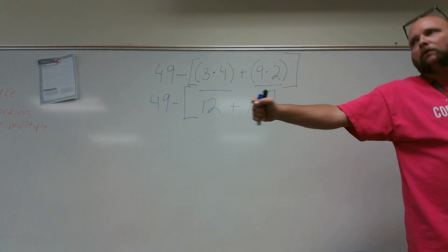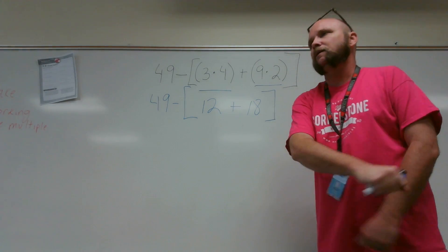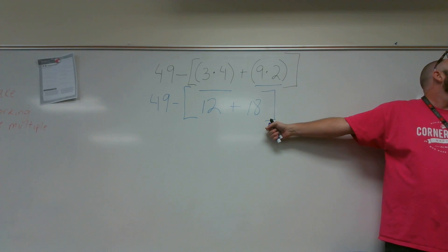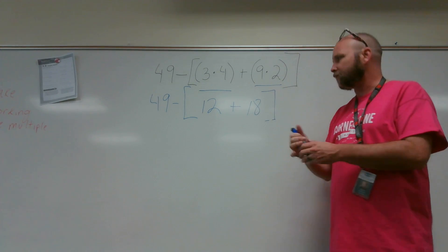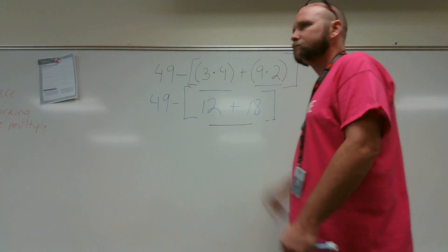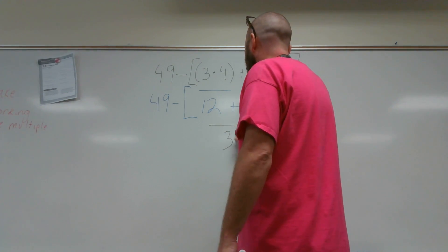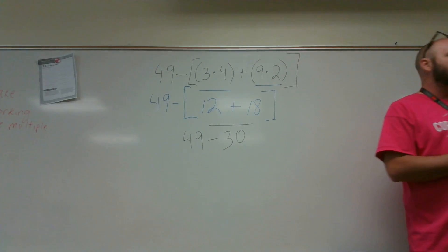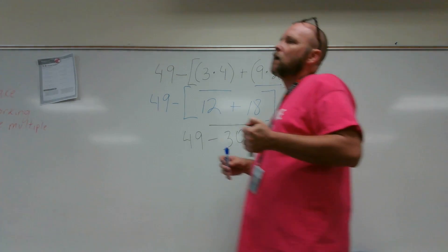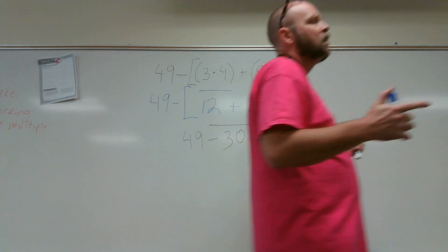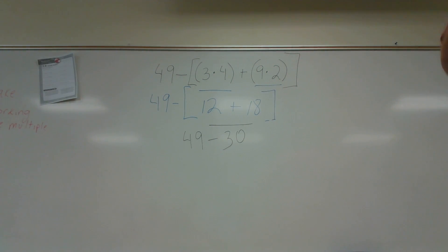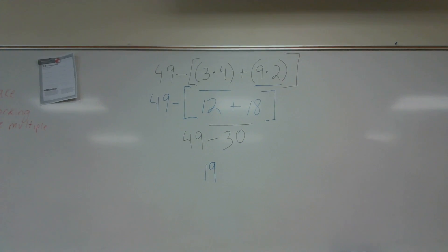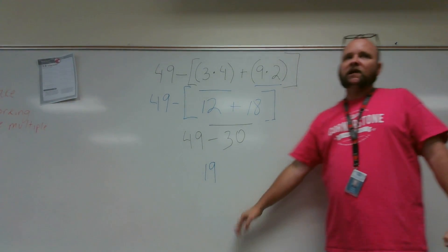We have a grouping symbol. Savannah, in this particular expression, what do we do first? 12 plus 18. Good. We find the sum of 12 and 18, which is what, Savannah? 30. Then we find the difference of 49 and 30, which gives us — Lizzie? 19. So we have simplified this expression all the way down to 19.